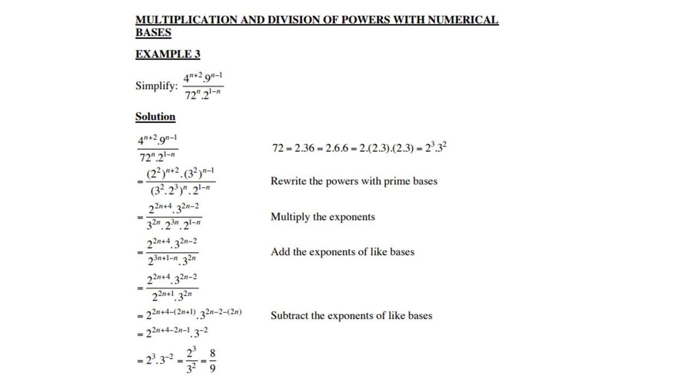Secondly, you need to multiply the newly created exponents with the existing ones. Like 4 to the power n+2 is now 2 to the power 2 to the power n+2, so multiply the 2 with the n and the 2 to get 2n+4. The 9 is 3 to the power 2n-2. The 72 to the power n becomes 3 to the power 2n times 2 to the power 3n, and the 2 to the power 1-n remains as is.